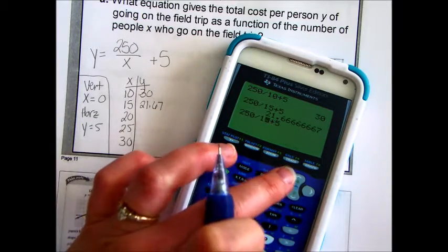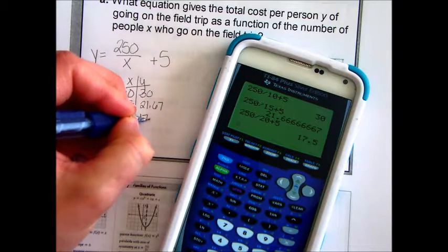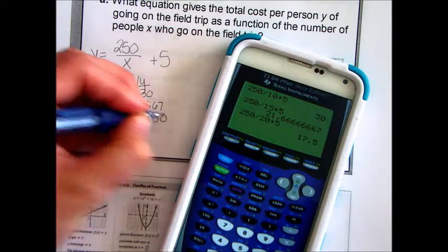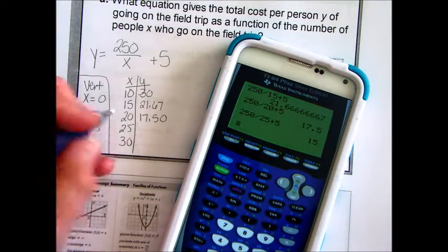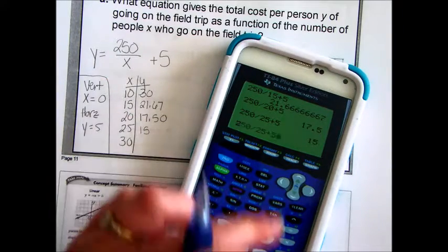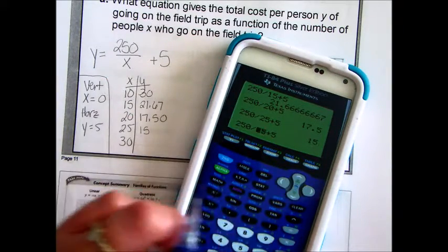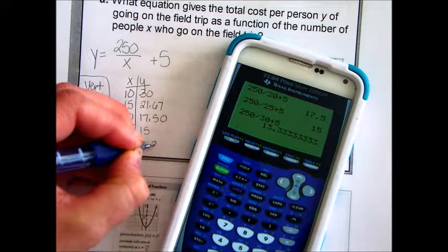Now, let's say 15 people are going to go. That's going to be $21.67 per person. Now, let's say that we have a class of 20 people. That's going to be $17.50. Okay, let's increase that number to 25, kiddos. It's going to be 15. Let's increase that number to 30 students. And, that's 13.33.